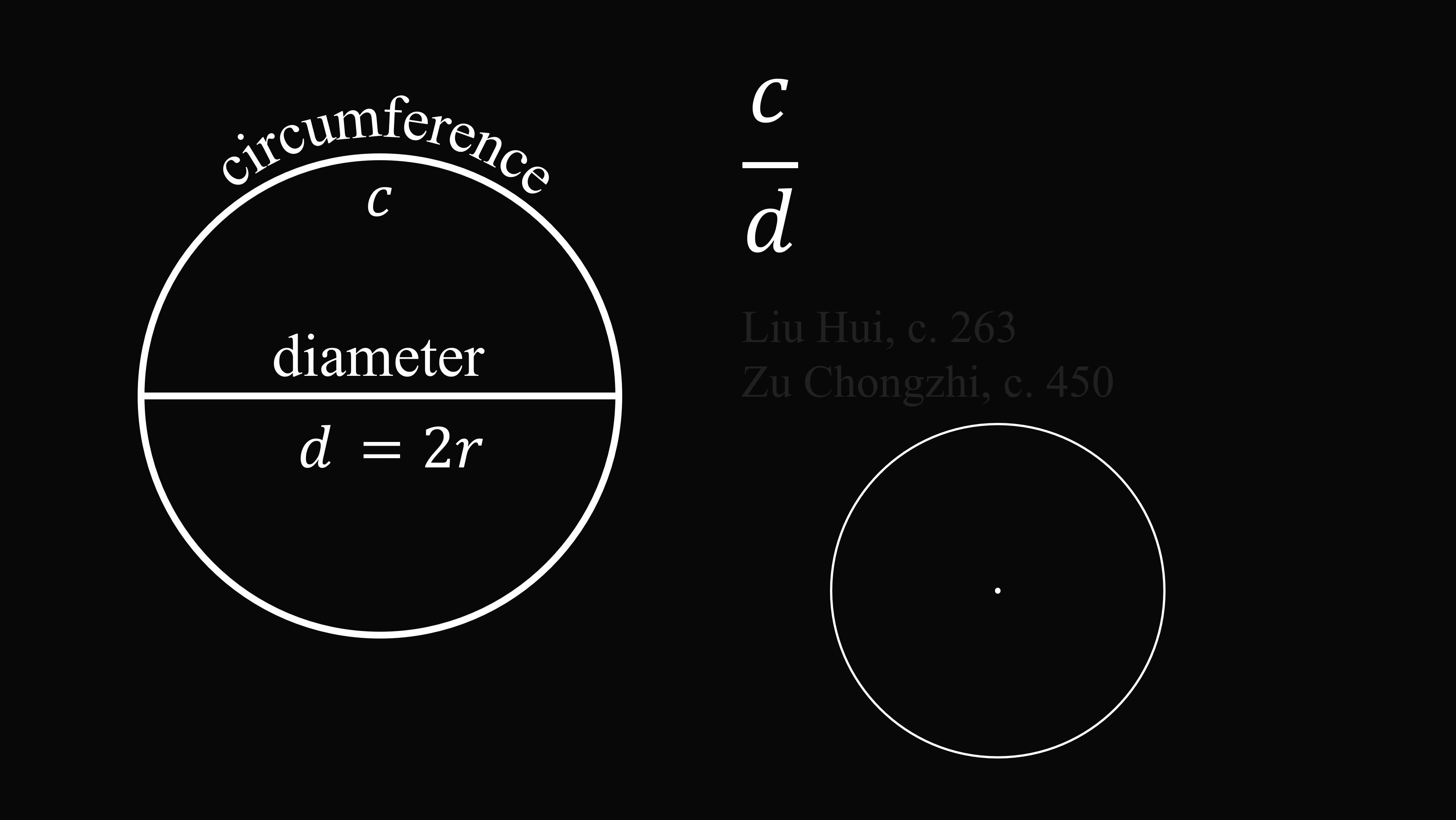About 500 years later in China, Lu Hui and then later Zhu Chongqi, pardon my pronunciation, I never learned this in school, I'm just going from what I read. They used an adaptation of Archimedes' method.